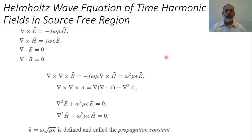Mathematically, to derive the wave equation, we take the curl of the first equation: curl of curl E equals minus j-omega times curl H. Since curl H equals j-omega-epsilon E, we substitute to get curl curl E equals minus j-omega times j-omega-epsilon E, which gives omega-squared mu-epsilon E.